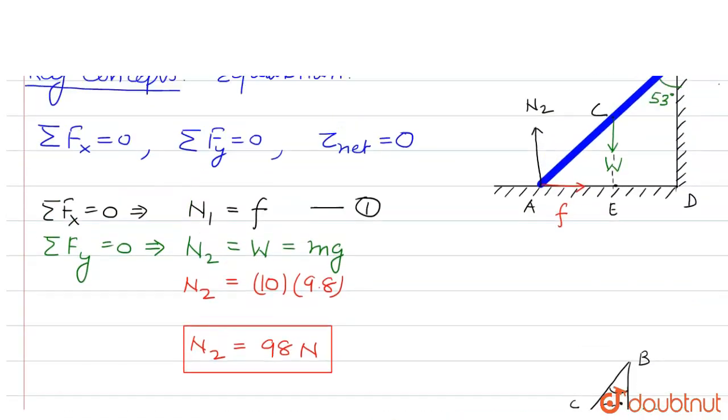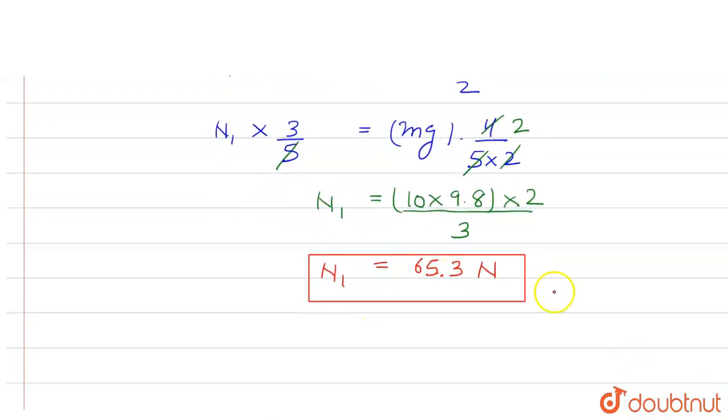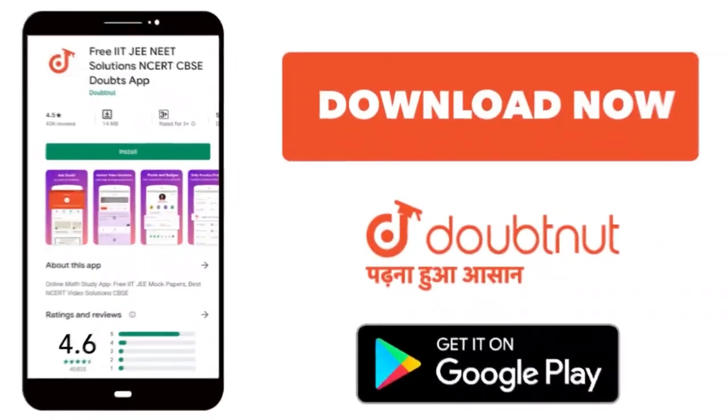So we have obtained N2 and N1. Also, from our equation number one, we have N1 equals f, so we can say this N1 is equals to f. For class 6 to 12, IIT, JEE, and NEET level, trusted by more than 5 crore students, download Doubtnet today.